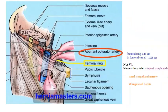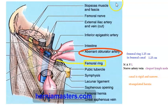The hernia goes via the femoral ring, through the femoral canal, and comes out of the saphenous opening. Now, if somebody asks you the contents of the femoral canal, let's look at what's there.